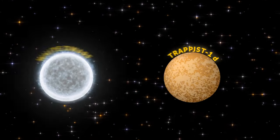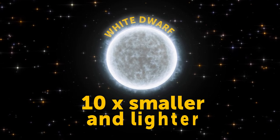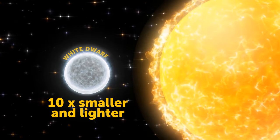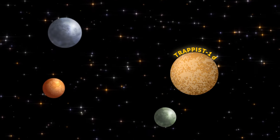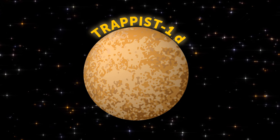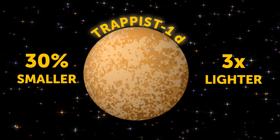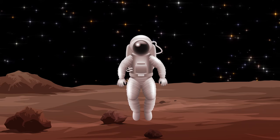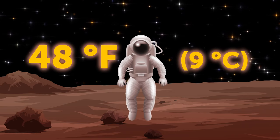Its host star is a white dwarf. It's a cold star, 10 times smaller and lighter than the Sun. There are seven planets around it. But TRAPPIST-1D is the most similar to Earth. It's only 30% smaller and three times lighter. But it has a rocky surface, and the temperature here is 48 degrees Fahrenheit.